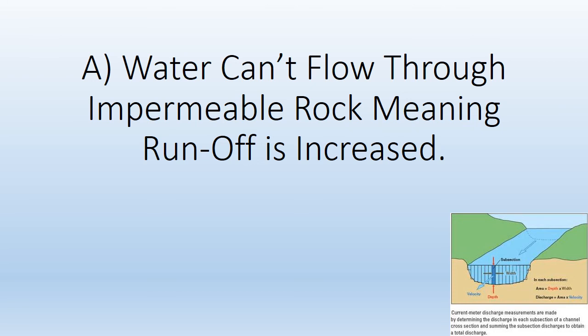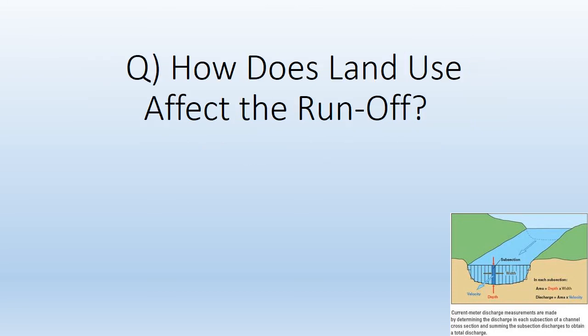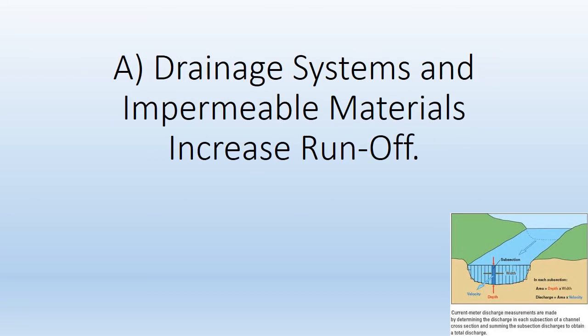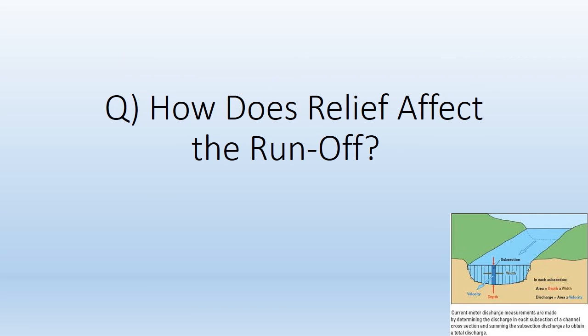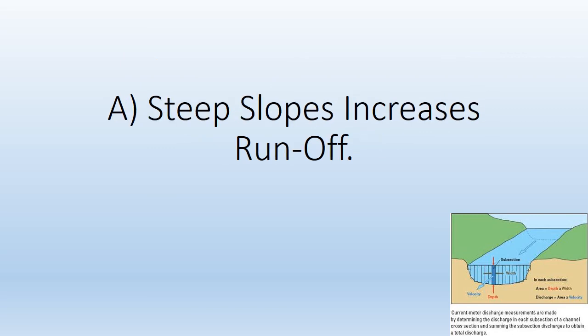Water can't flow through impermeable rock, meaning runoff is increased. How does land use affect the runoff? Drainage systems and impermeable materials increase runoff. How does relief affect the runoff? Steep slopes increase runoff.